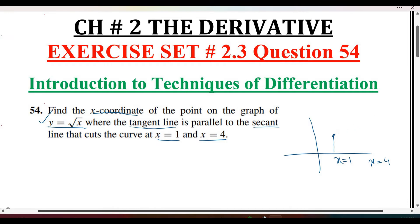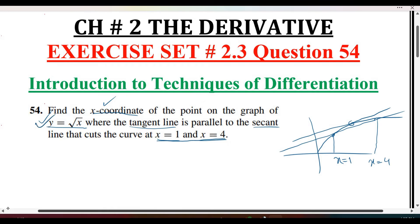If we look at this graph, this is the secant line, and the tangent line is parallel to it. We need to find which point has the tangent line parallel to the secant line. The x-values are x equals 1 and x equals 4, where the secant line cuts this curve.